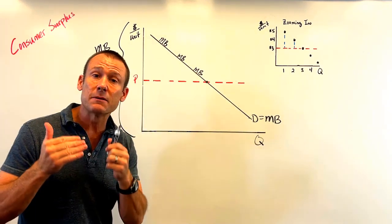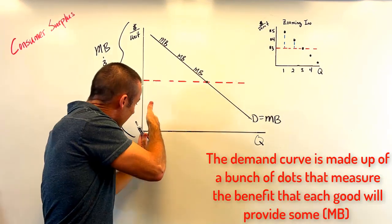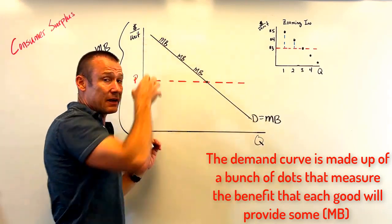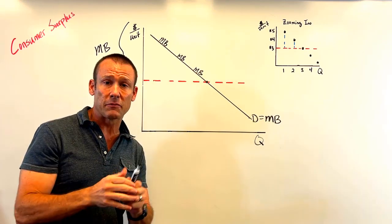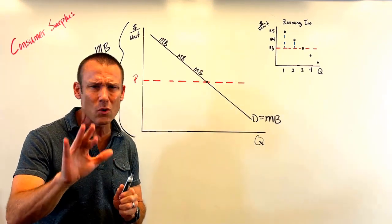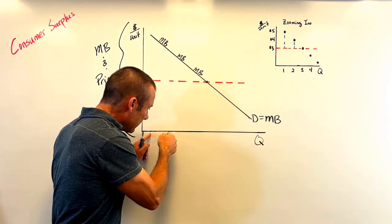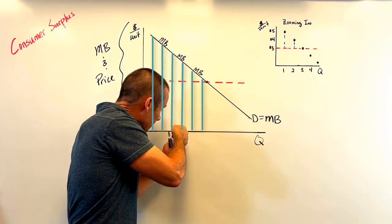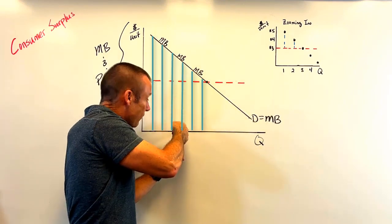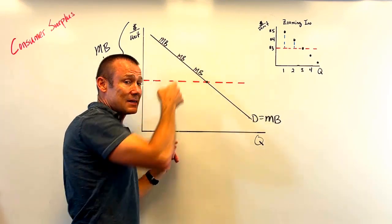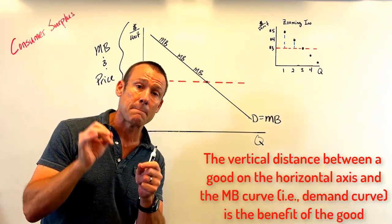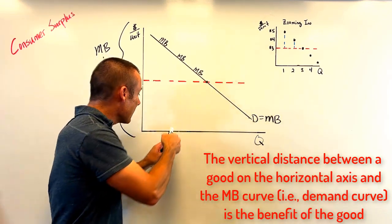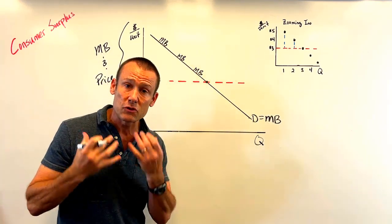The demand curve, which is the marginal benefit curve, is a bunch of dots sitting above goods on the horizontal axis. The vertical distance between the horizontal axis and the dot on the demand curve is the benefit that good is going to provide — it's the maximum a consumer is willing to pay. Every time that dot is above the price, the consumer gets surplus, because the price represents what they have to pay to acquire the good.